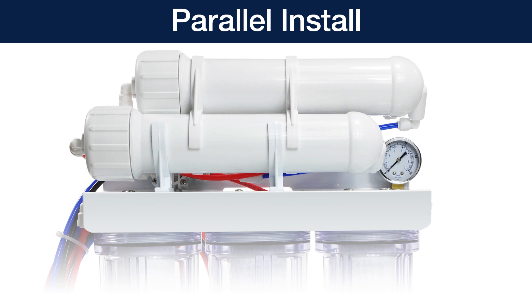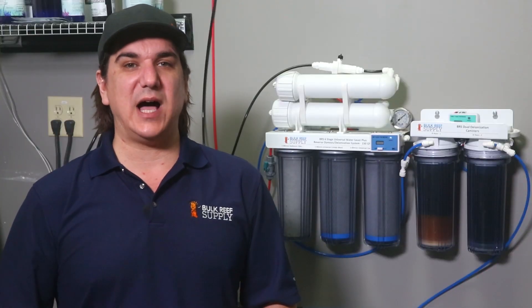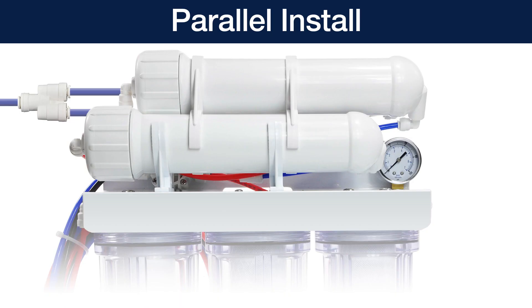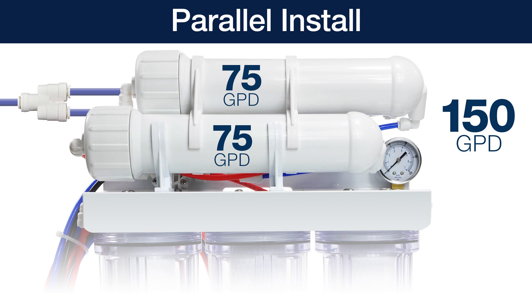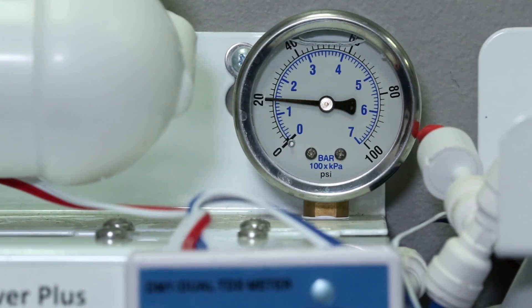Running the two RO membranes in parallel means simply using a divider prior to the membranes so they both have their own water feed. Essentially you are using the sediment filters and carbon blocks to pre-filter the water for two separate membranes and they will perform that way. Both providing 75 gallons a day for a total of 150 and both producing their own waste water. Provided you have enough water pressure at double the flow rate, this is a perfectly suitable option.